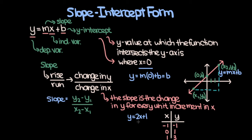This line is in slope-intercept form, so 2 is the slope. And as you can see, every time we increment our x by one unit, the corresponding change in y is always 2. Negative 1 plus 2 is 1, and 1 plus 2 is 3. Hopefully that makes sense.